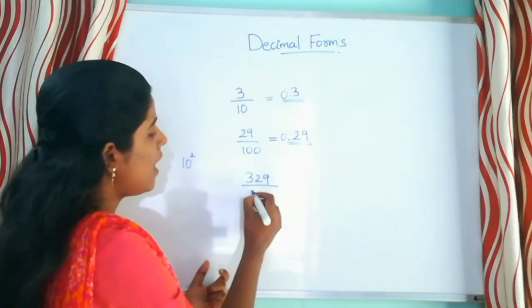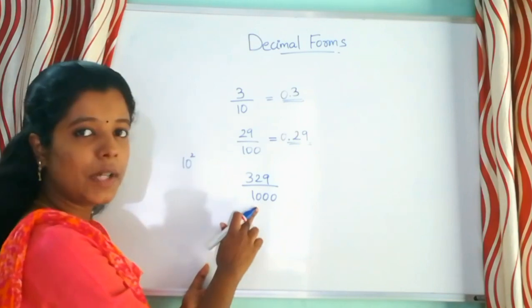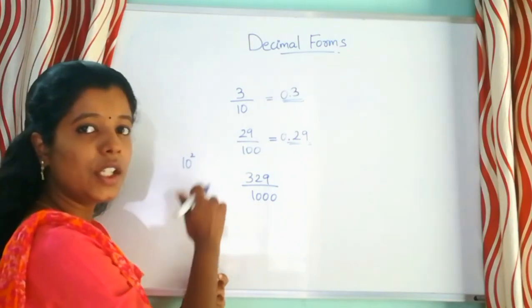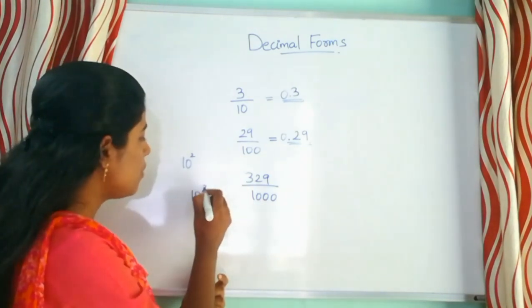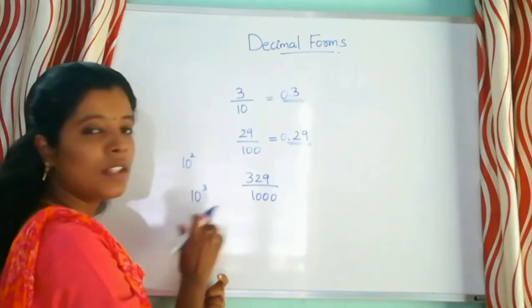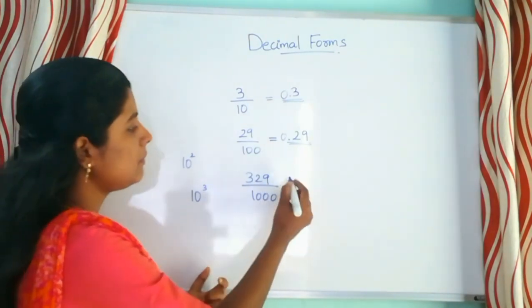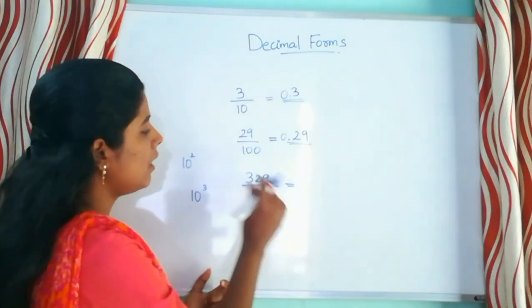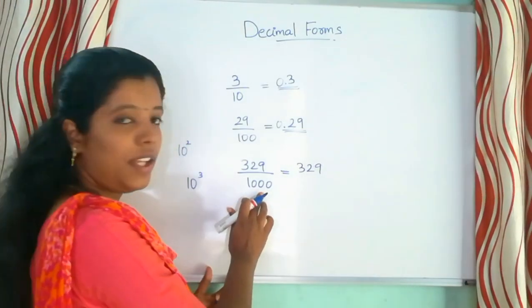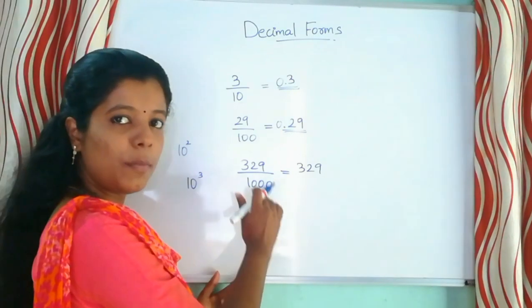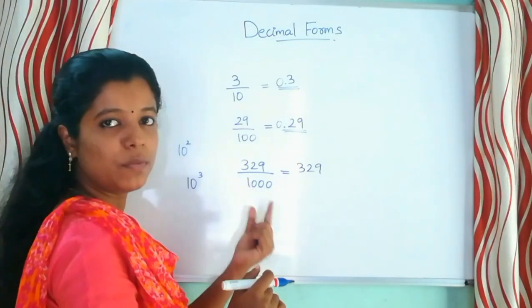We divide by 1000, which is 10 raised to the power 3. We divide by 10. Then the numerator and the denominator, we divide by 3.